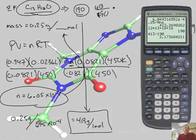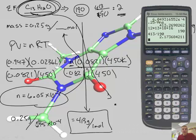So 413 divided by 190 is 2, close enough. That means this formula is off by a factor of 2, so I need to double it. The real formula of ibuprofen is C26H36O2. That's the answer to this problem.